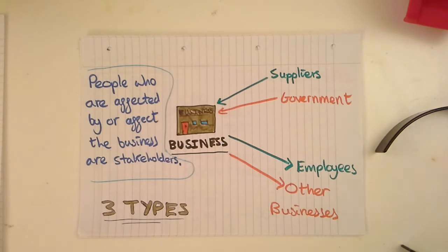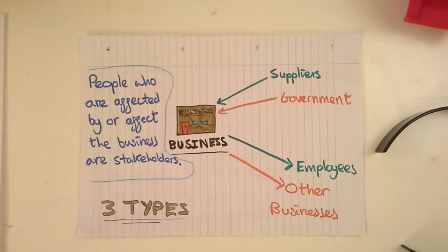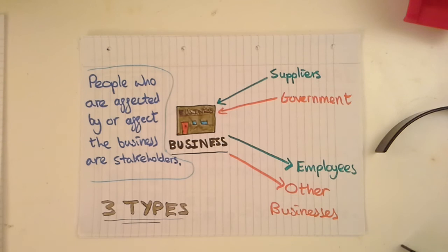A business could positively impact employees if it had high wages and good working conditions. But at the same time, it could negatively impact other businesses by taking away customers if it increased the competition in the market. So let's look at three different types of stakeholders we can have.